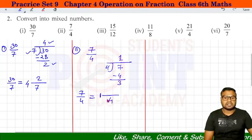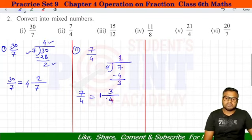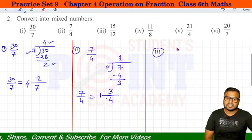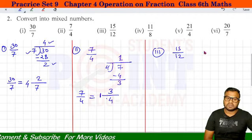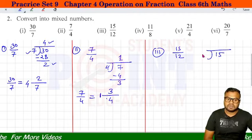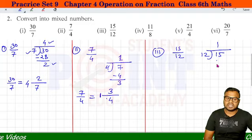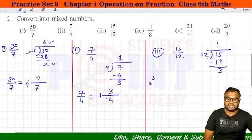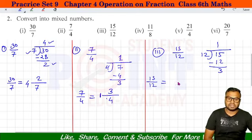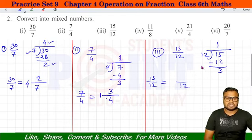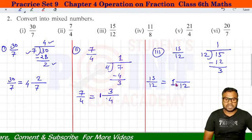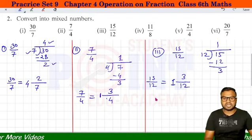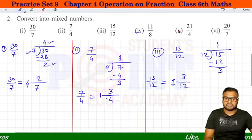Third: 15 divided by 12. Simply divide करें — 12 ones are 12, minus 15 minus 12 = 3 remaining। So 15 divided by 12: quotient is 1, remainder 3, divisor 12। Please take screenshot, then we do 4, 5, 6.